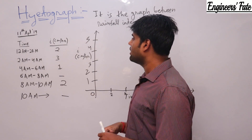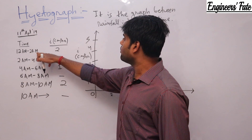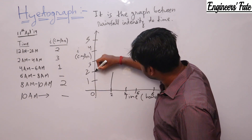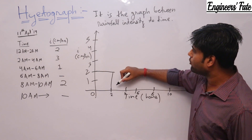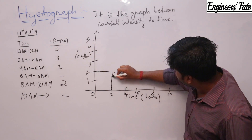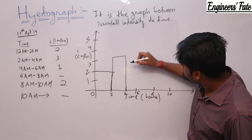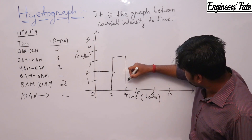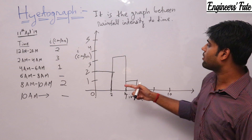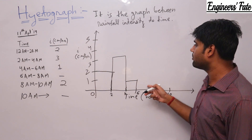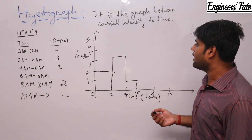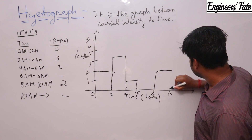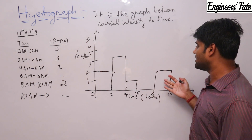Now drawing the hyetograph: from 12 am to 2 am, intensity is 2 cm/hr, so I draw a bar of height 2. From 2 am to 4 am, intensity is 3. From 4 am to 6 am, intensity is 1. From 6 am to 8 am there is no rainfall, so no bar. From 8 am to 10 am, intensity is 2. This gives a bar chart — that is the hyetograph.